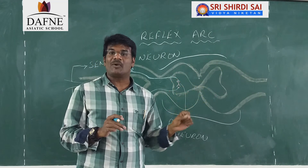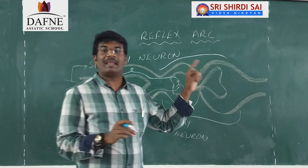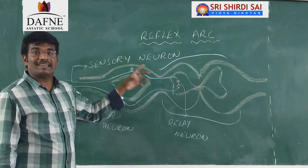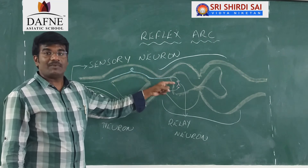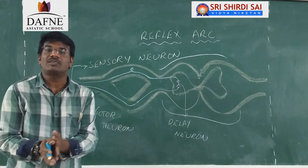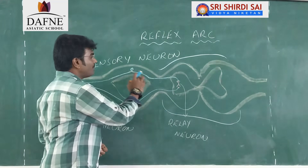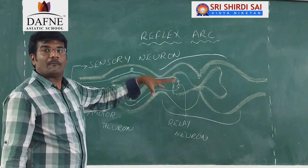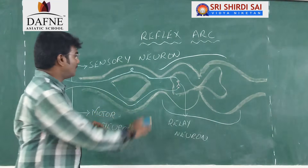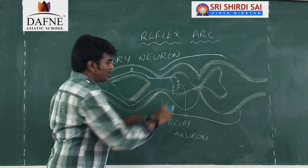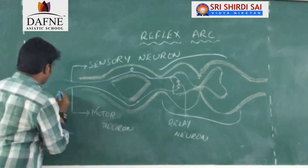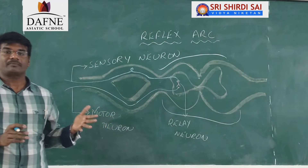The longest cell inside the human body is the nerve cell, which can have a maximum length of one meter. The sensory neuron senses the particular stimulus and sends that information to the spinal cord. Here, there is another neuron called the relay neuron. The relay neuron receives information from the sensory neuron and activates the particular muscle cell responsible for conducting that particular response.